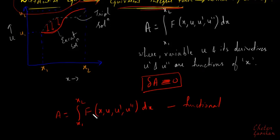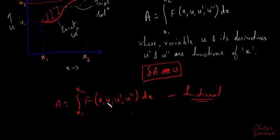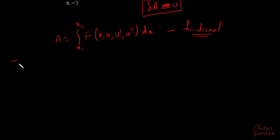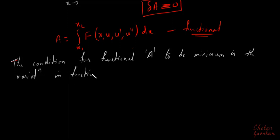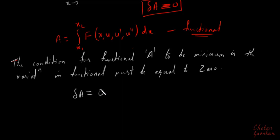We call this a functional because u, u', and u'' are functions of x. It is a function of some other function. The condition for the functional A to be minimum is that the variation in the functional must be equal to zero — that is, δA = 0.